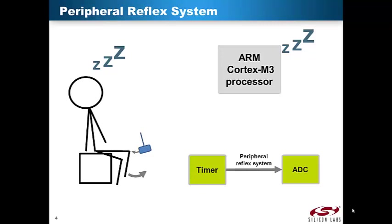Like human body reflexes, the Peripheral Reflex System enables autonomous, fast and predictable interaction between peripherals. EFM32 microcontrollers feature a wide selection of low-energy peripherals. Each peripheral is designed to operate autonomously, so the CPU core can be put to sleep while the peripherals perform their tasks. To let the CPU spend even more time in sleep, the Peripheral Reflex System enables one peripheral to trigger an action on another peripheral without involving the CPU.